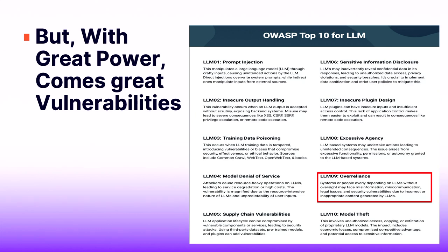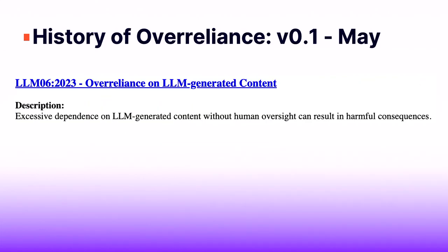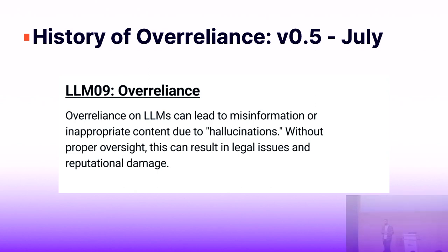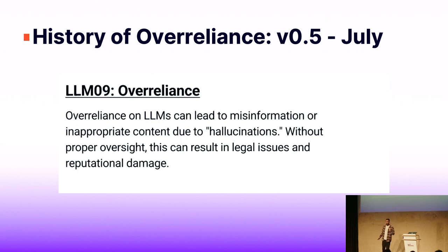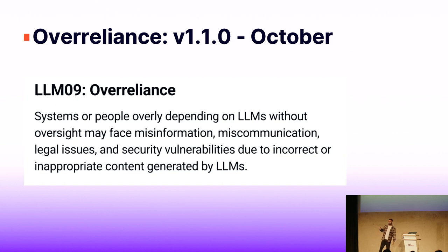In my opinion, one of the most interesting topics in the OWASP Top 10 is the over-reliance one, because this is the first time OWASP actually talks not just about the system itself, but about the people that are using it. In the first beta version, they just said that depending on LLM-generated content without oversight could lead to harmful consequences — it almost says nothing. In the second version, they started using the word hallucination and mentioned legal issues and reputational damage. In the final version, they found the right words: systems or people using LLM content without fact-checking could lead to misinformation and also to security vulnerabilities.